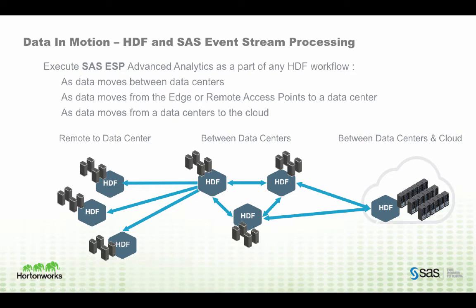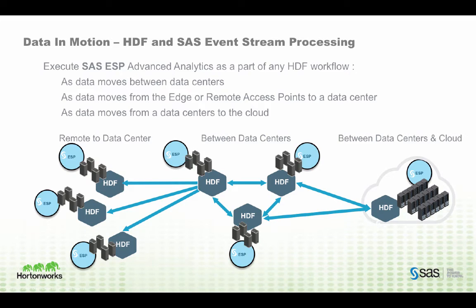Taking a closer look at data in motion, we start with the Hortonworks Data Flow. HDF is designed for enterprise data movement, including simple event processing. By integrating SAS ESP with HDF from the data center to the edge and back, a modern data application can incorporate complex event processing into their data flows. HDF and SAS ESP are tightly integrated — both have a lightweight architecture and can easily be deployed in the data center, at a regional site or store, or all the way out to the far edge. The tight integration of HDF and SAS ESP is exactly where organizations can significantly benefit their bottom line.